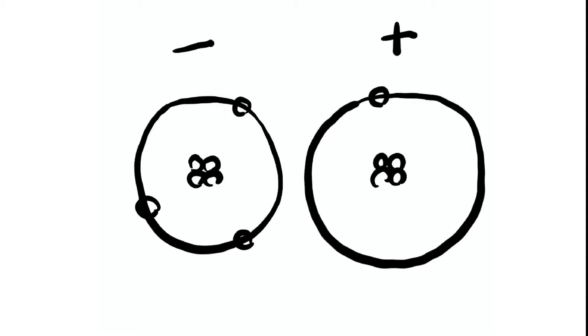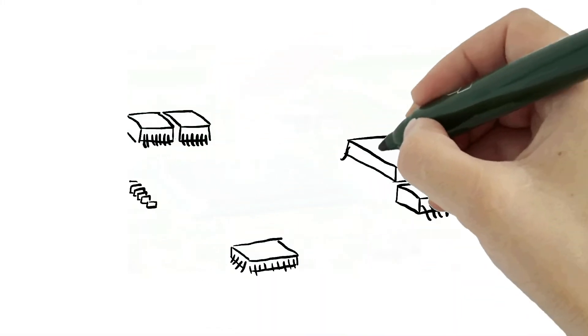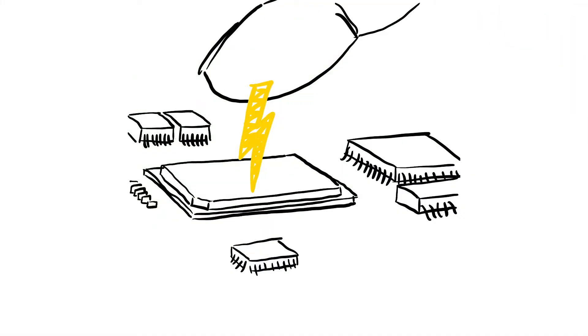As objects and surfaces interact, the atoms that make up those materials often exchange electrons. Atoms are always working to achieve equilibrium, so electrons are often exchanged to reach a neutral charge. This happens all the time, but causes problems when it is a sudden and uncontrollable exchange or spark.